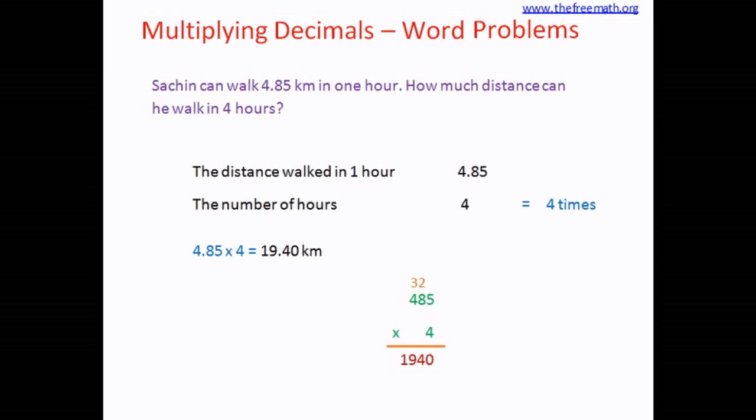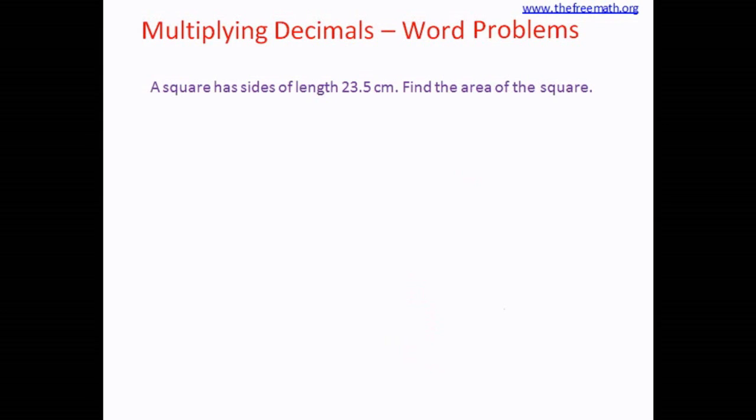Sachin can walk 19.4 kilometers in four hours. The next one is: a square has sides of length 23.5 centimeters. Find the area of the square.